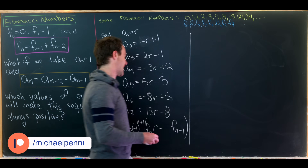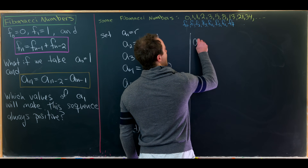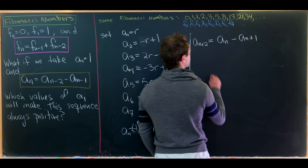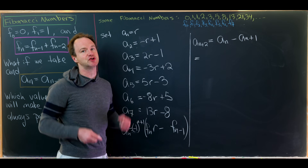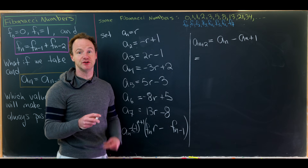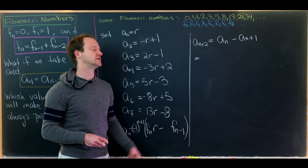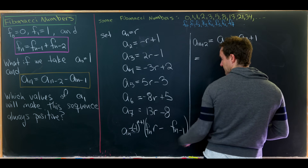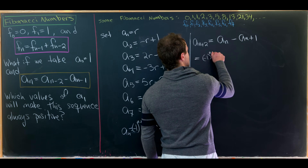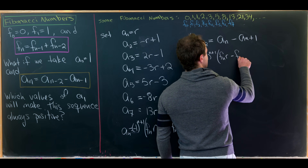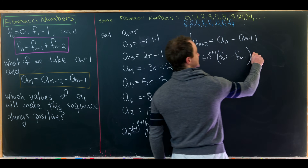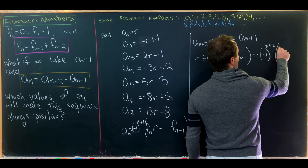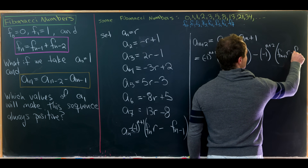Let's verify this using induction. We look at a_{n+2} = a_n - a_{n+1}. By the induction hypothesis, a_n = (-1)^{n+1} * (F_n * r - F_{n-1}), and we subtract a_{n+1} = (-1)^{n+2} * (F_{n+1} * r - F_n).